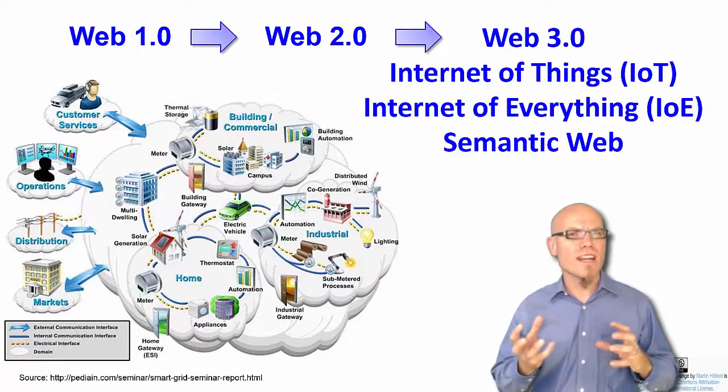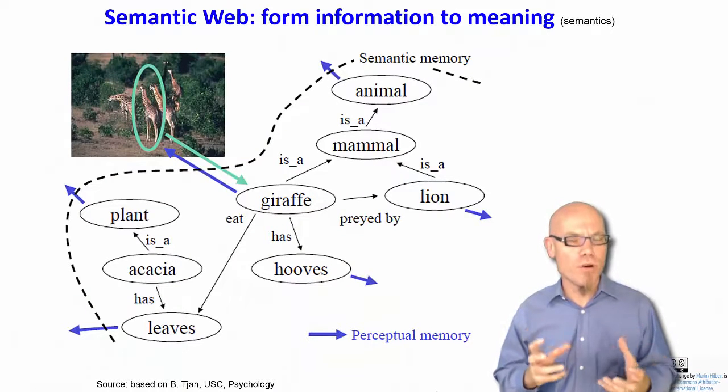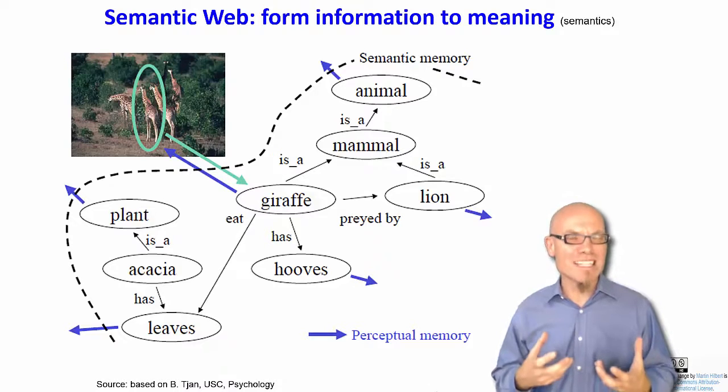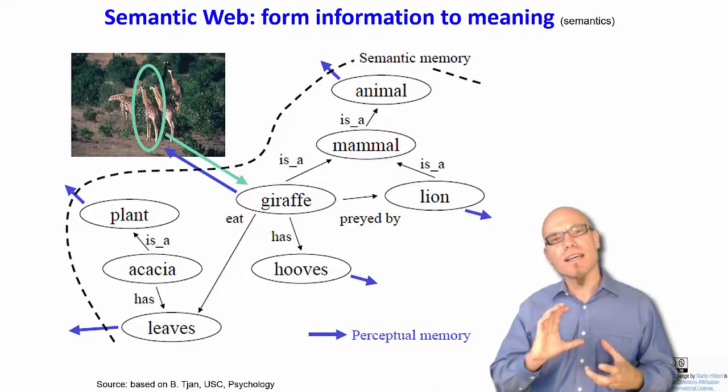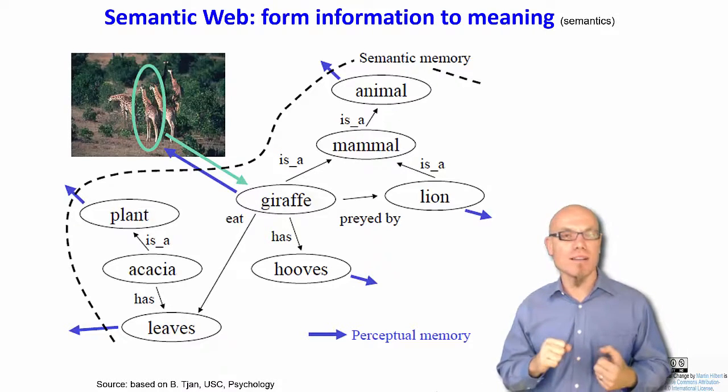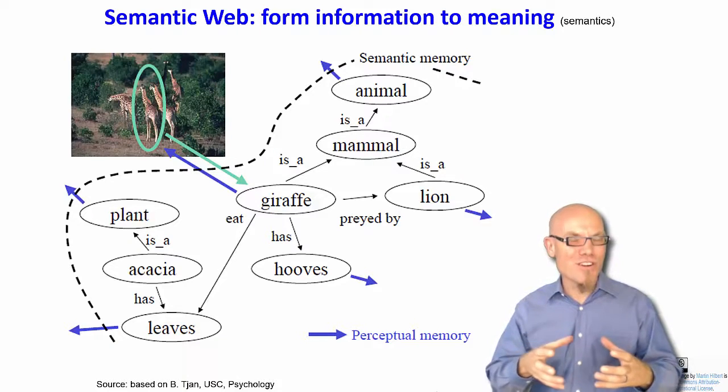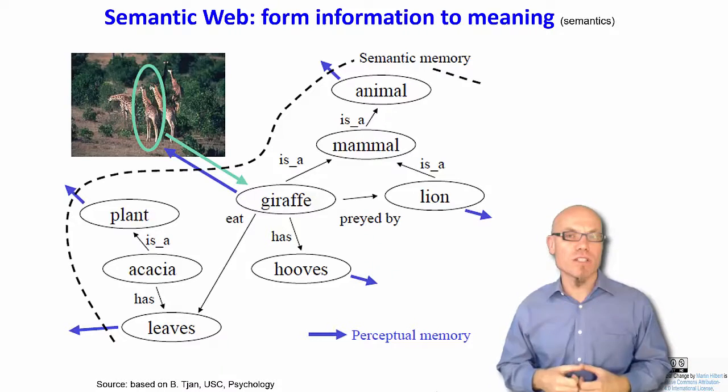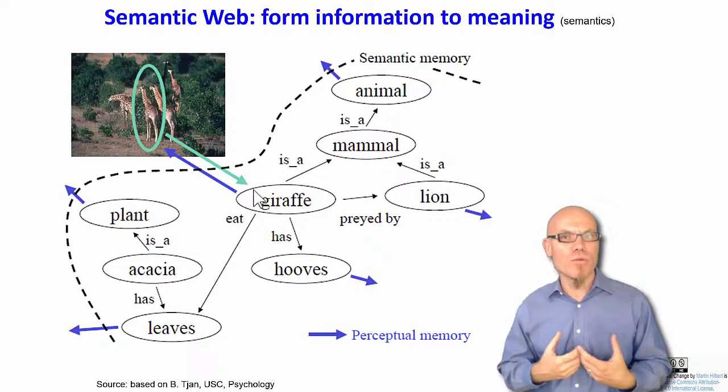Now, in order for things to coordinate among each other, they have to understand meaning. And that's why the Web 3.0 often goes together with the catchphrase semantic web. Semantic stands for meaning. That means the challenge here consists in allowing machines to understand meaning. So meaning means that we provide the semantic network of what does one term actually mean. We provide that to the machines.